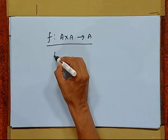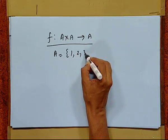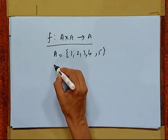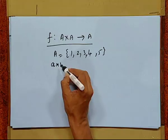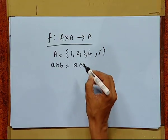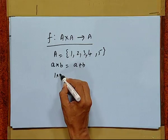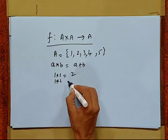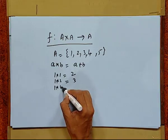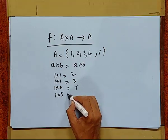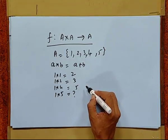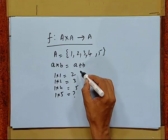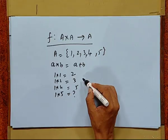For instance, we have a set A: suppose {1, 2, 3, 4, 5}. We define operation star by A star B is A plus B. Then we have 1 star 1 is 2, 1 star 2 is 3, 1 star 4 is 5. But 1 star 5 — we have no element in the set A. So this is not an example of binary operation because this rule does not make it a function. In short, always the output of the binary operation must be in the set. So for this set, this is not a binary operation.